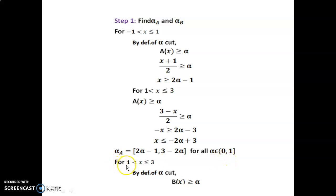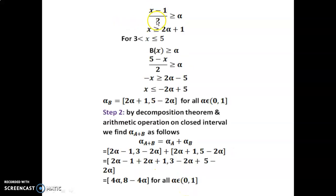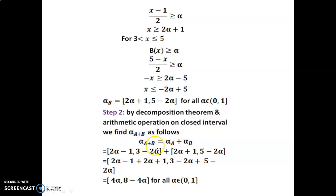For B: interval [1,3] gives x ≥ 2alpha+1, and interval [3,5] gives x ≤ 5−2alpha. So alpha-cut B = [2alpha+1, 5−2alpha] for all alpha in (0,1]. Step 2: By the decomposition theorem and arithmetic operations on closed intervals, alpha-cut of (A+B) = alpha-cut A + alpha-cut B.